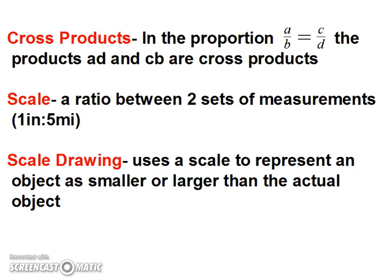Cross products: in the proportion A divided by B equals C divided by D, the products A times D and C times B are cross products. A scale is a ratio between two sets of measurements — for example, one inch equals five miles. These are often used for maps. A scale drawing uses a scale to represent an object as smaller or larger than the actual object.